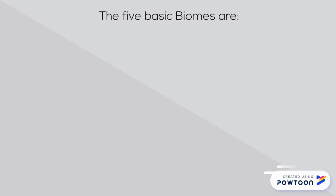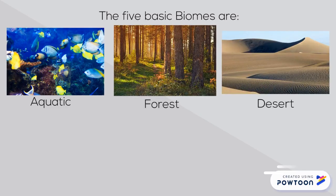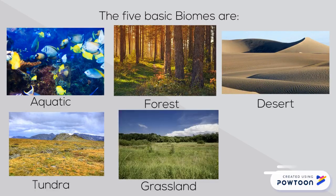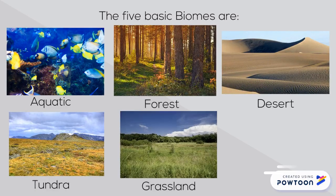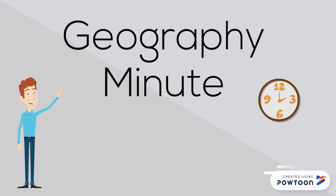The five basic types of biomes are aquatic, forest, desert, tundra, and grassland. We'll talk more about each biome in other videos. I hope this has helped — that's your Geography Minute.